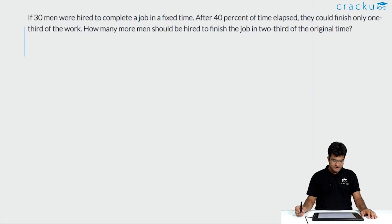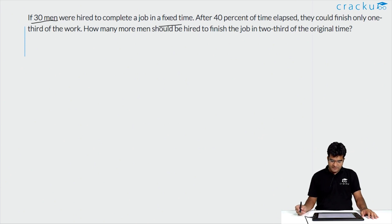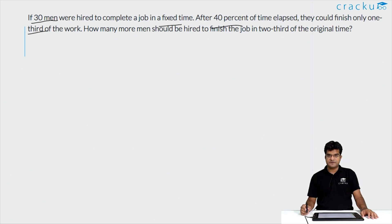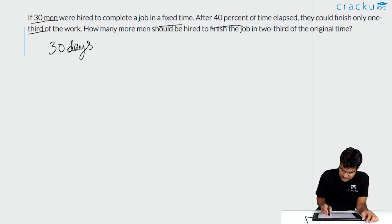In this question it has been given that there was a work that needed to be done and 30 men were hired to do it. They were also given a fixed time to complete the job. After 40% of the time had elapsed, they could finish only one third of the work. Now how many more men should be hired to finish the job in two thirds of the original time?